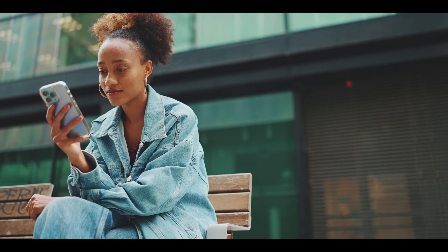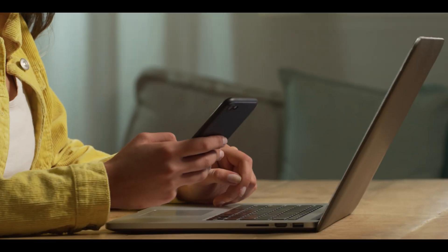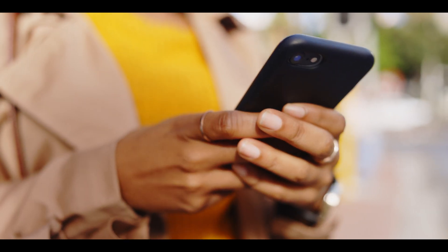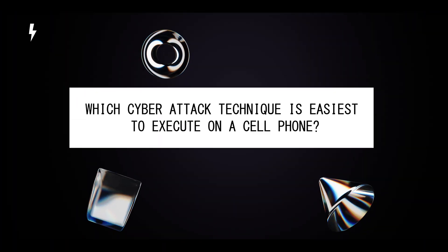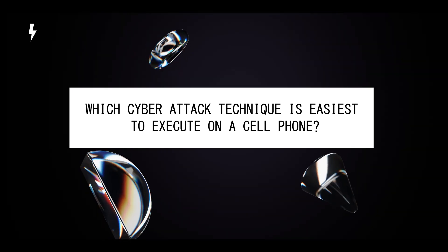To prevent your phone from being hacked, first secure your device. Use a strong password or biometric lock — set up a complex password, PIN, or biometric lock like fingerprint or Face ID to prevent unauthorized physical access. Avoid simple codes like 1234 or 000. Keep your phone with you, as physical access is one of the easiest ways for hackers to compromise your device. Be cautious of public Wi-Fi — avoid connecting to unsecured public networks, which hackers can exploit to intercept your data. Use a VPN for additional protection on public networks.